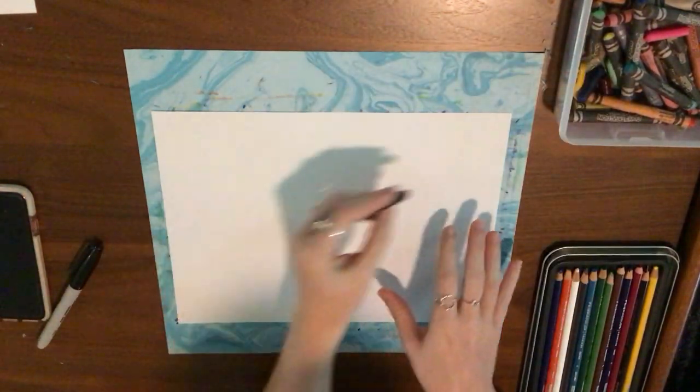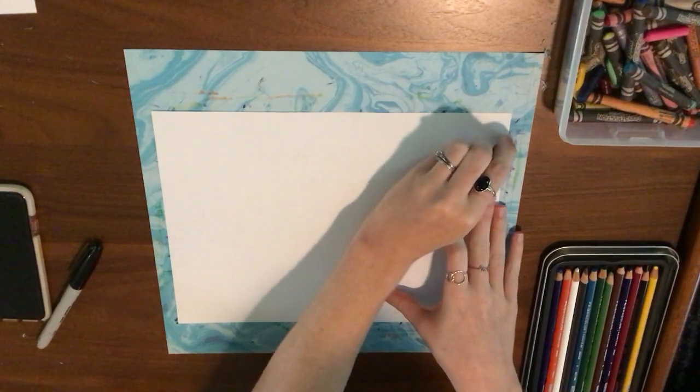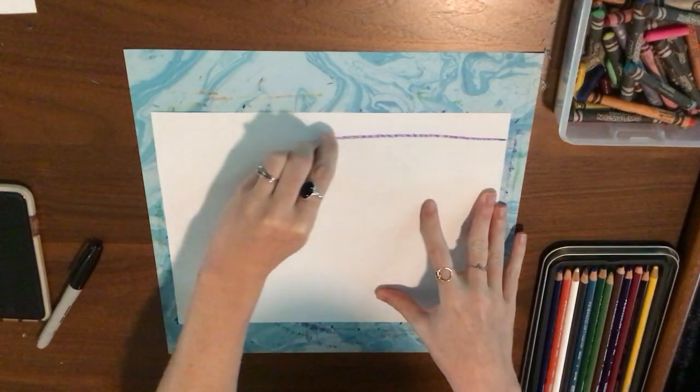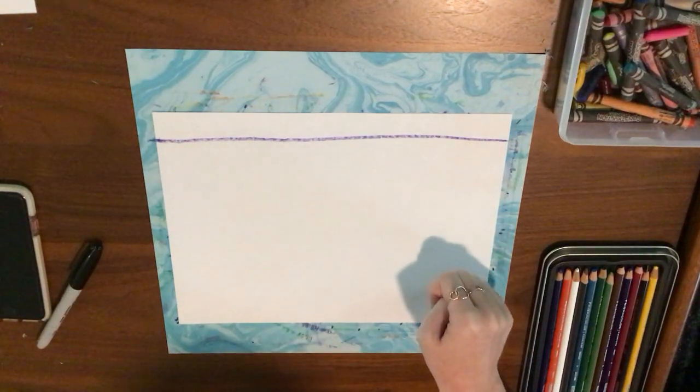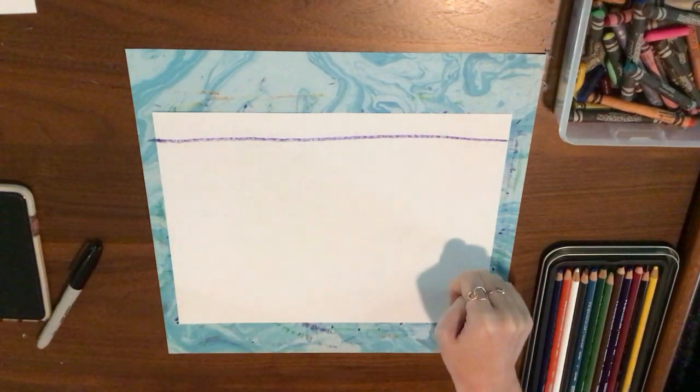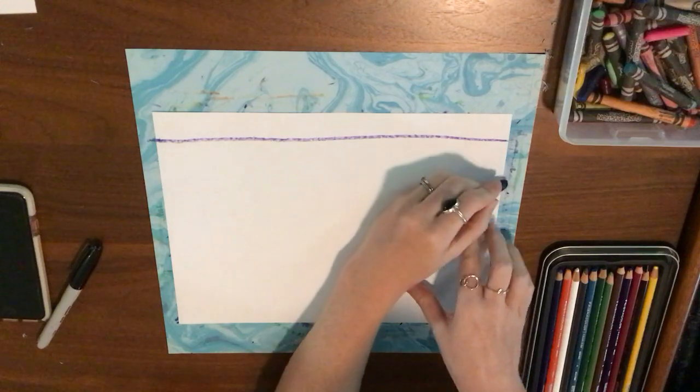Hello Pre-K Artists! This week we are going to be drawing different types of lines. So I'm going to start by drawing a horizontal line across my paper with a crayon. You can use any materials that you have available.